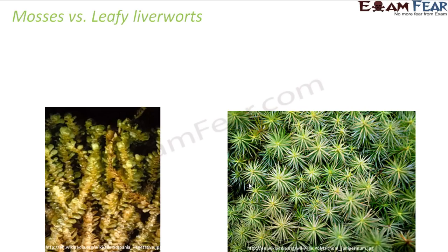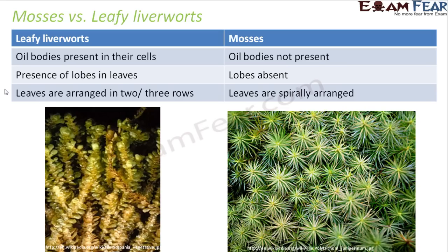Mosses and leafy liverworts share many things in common. However, there are some differences. In leafy liverworts, oil bodies are present in their cells, but in mosses there are no oil bodies. In leafy liverworts, leaves have lobes, but in mosses there are no lobes. In leafy liverworts, leaves are arranged in two or three rows, but in mosses the leaves are spirally arranged. These are characteristics that differentiate leafy liverworts from mosses.